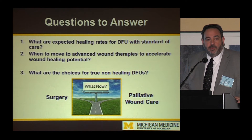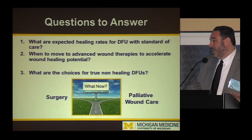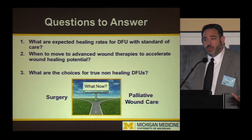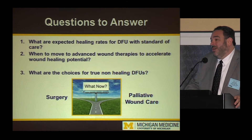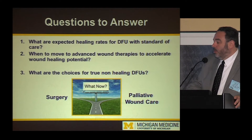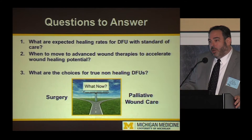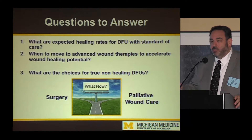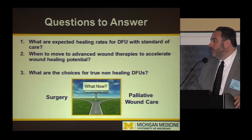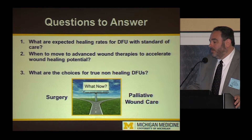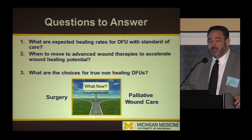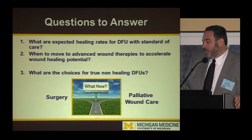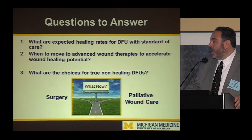In terms of objectives for the presentation, I should really answer three questions. First, what are expected healing rates in diabetic foot ulcers with standard of care? Second, if we're not seeing progress towards wound healing with standard of care, when would we consider moving to advanced modalities to accelerate wound healing and avoid a non-healing wound? And third, at some point there may be a fork in the road — what choices do we have for true non-healing wounds?